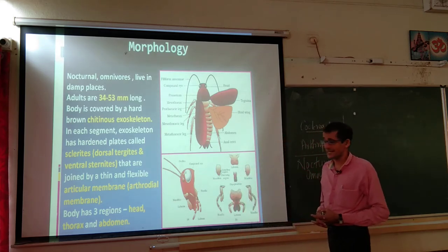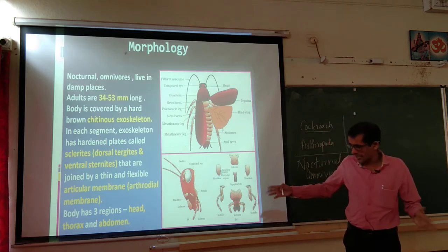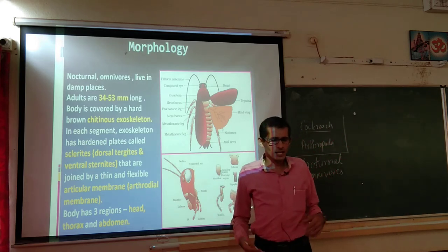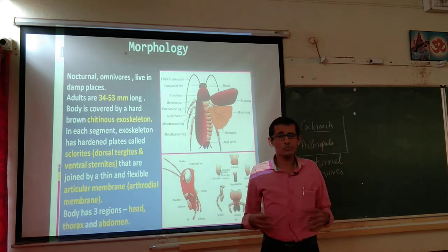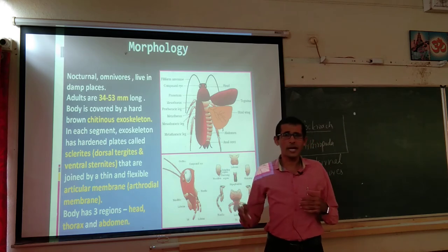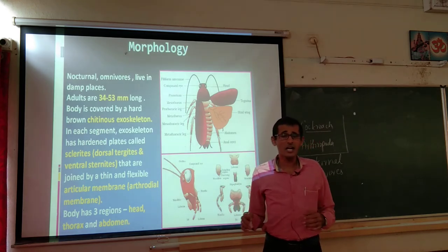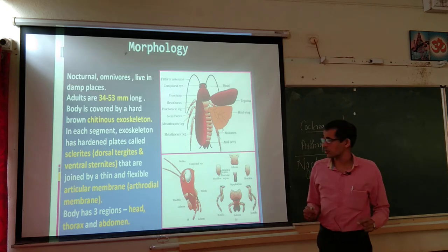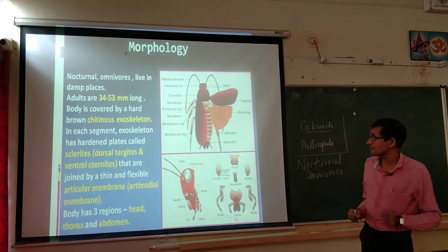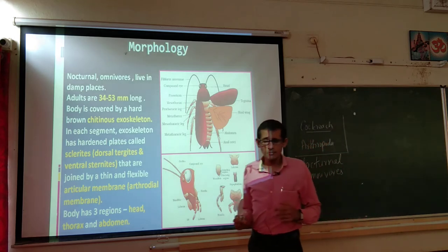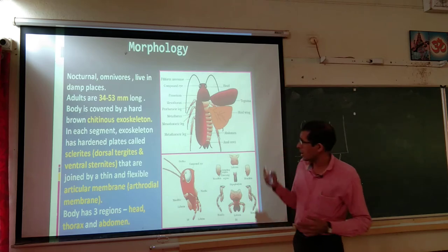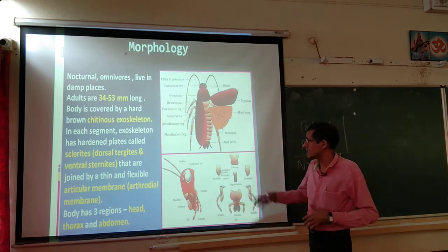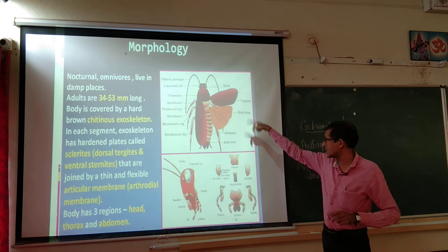Cockroaches live in damp, shady places — such as stock rooms and bakeries — where sunlight availability is less and moisture content is present. Adults are 34 to 53 millimeters long, which is approximately 3.4 to 5.3 centimeters. The body is covered by a hard brown chitinous exoskeleton. Chitin is the biomolecule acting as the exoskeleton structure in Arthropoda, as seen in lobsters, crabs, and prawns.